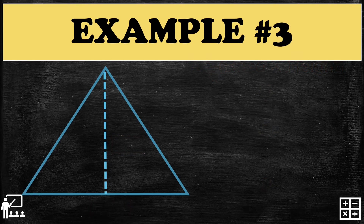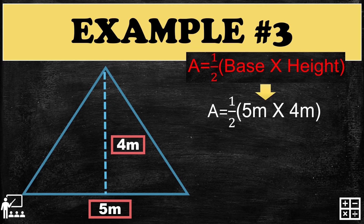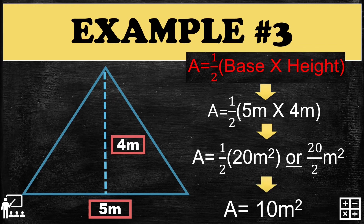Example number 3 has a base of 5 meters and a height of 4 meters. We multiply 5 times 4, which gives you 20, then divide it by 2. 20 divided by 2 gives you 10 meters squared.